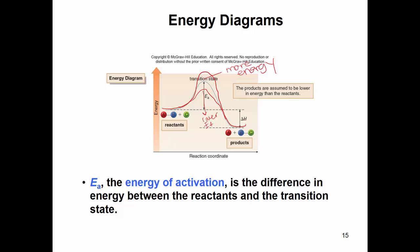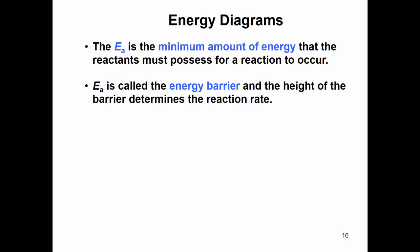Delta H, which we discussed previously, is your enthalpy — the difference in energy between the reactants and the products. Notice here the products are lower in energy. This would be an exothermic reaction because your products are low in energy, so your delta H is negative. The activation energy is the very minimum amount of energy that reactants must have for the reaction to occur.